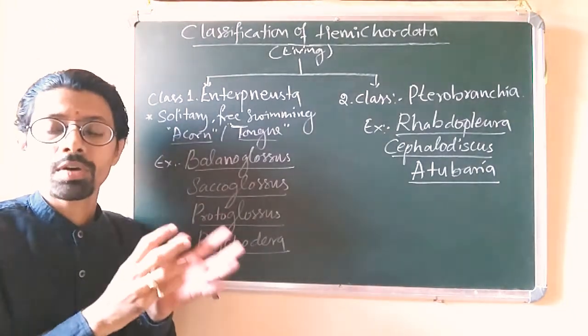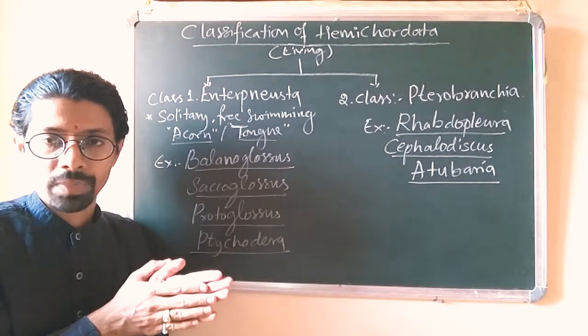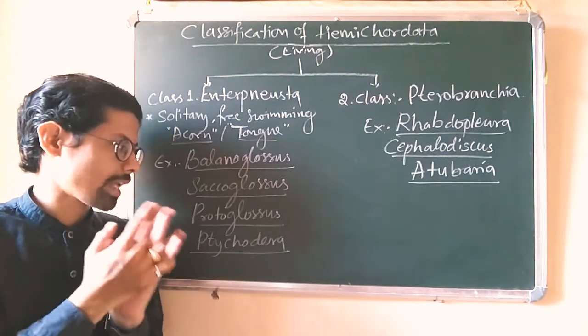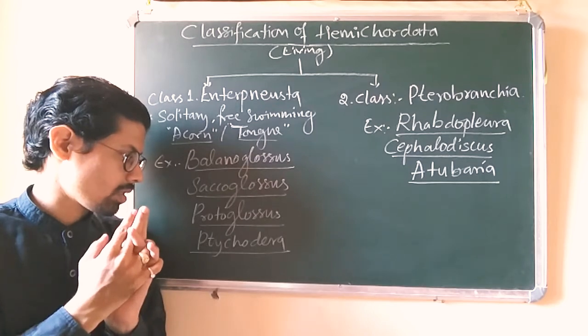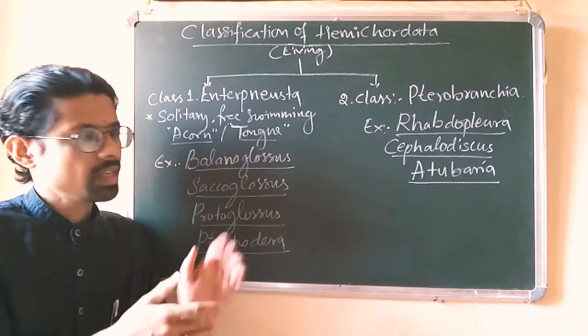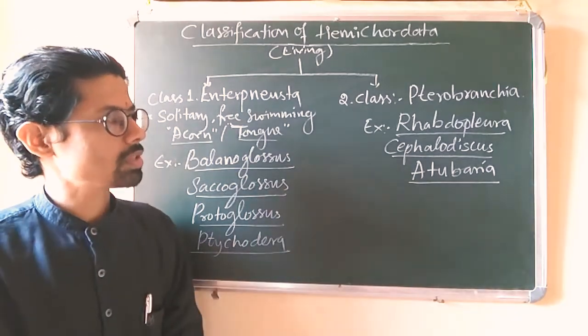The larva is called Tornaria larva. Examples of this particular order include Balanoglossus, Saccoglossus, Protoglossus, and Ptychodera. There are several others also—these are some of the examples. The next class which we will be discussing is Pterobranchia.